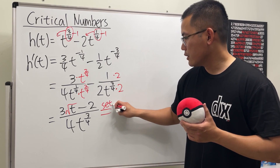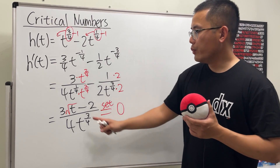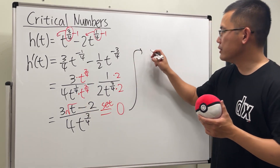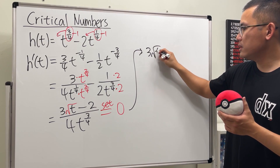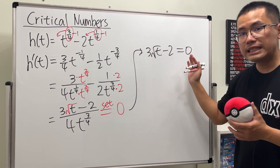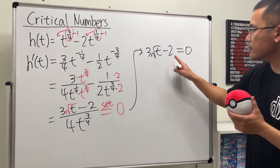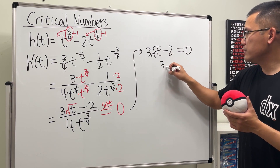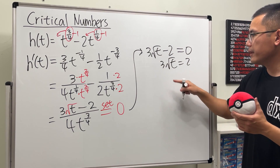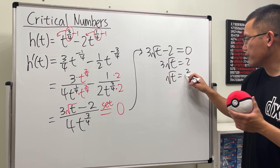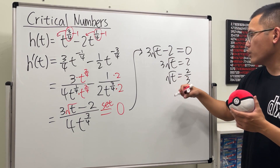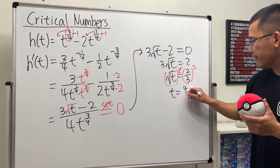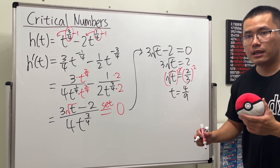Now we set this equal to zero. When we have a fraction set equal to zero, we only need the numerator equal to zero: three square root of t minus two equals zero. Bring the two to the other side and divide by three — square root of t equals two over three. Then square both sides: t equals four over nine.